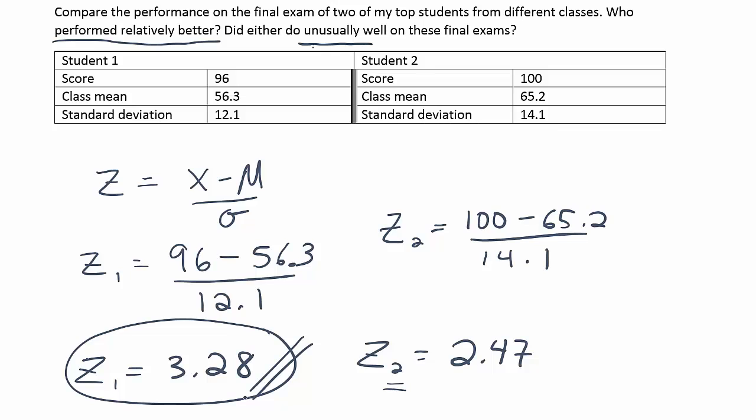And typically, exam scores follow a bell-shaped distribution. So certainly, student two is definitely going to be in the top two and a half percent of her class. And then student one, of course, is also definitely within the top two and a half percent. In fact, we could even say that based on the empirical rule, if we assume the distribution is bell-shaped, that student one is definitely within the top one percent of the class.